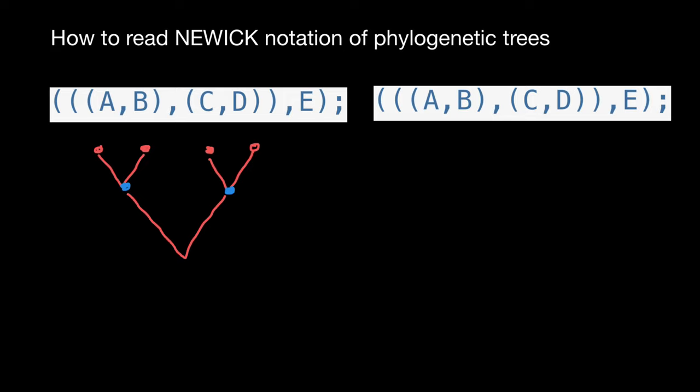So this is going to be a reconstruction of what we see here. We also have outgroup species E, which means the relationship has to be as follows: species E is the outgroup, and the recent common ancestor is going to be here for this whole group.